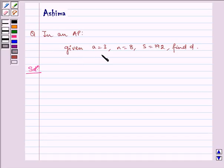In an AP, given a is equal to 3, n is equal to 8, s is equal to 192, find d.